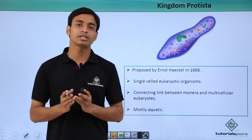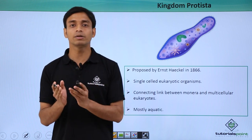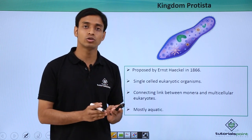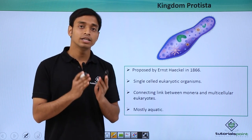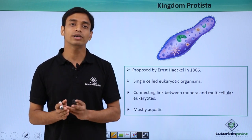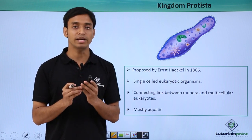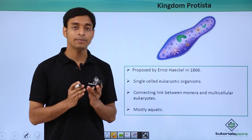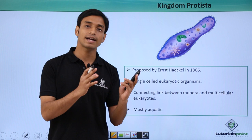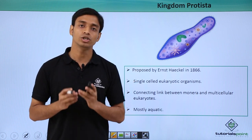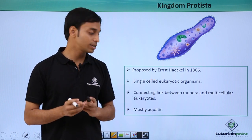Kingdom Protista is regarded as a connecting link between Kingdom Monera, which includes the prokaryotes and which are single-celled, and the complex multicellular eukaryotes which includes Kingdom Fungi, Kingdom Plantae, and Kingdom Animalia. So Protista are regarded as a connecting link between prokaryotes and complex multicellular eukaryotes, but they are themselves single-celled eukaryotes.